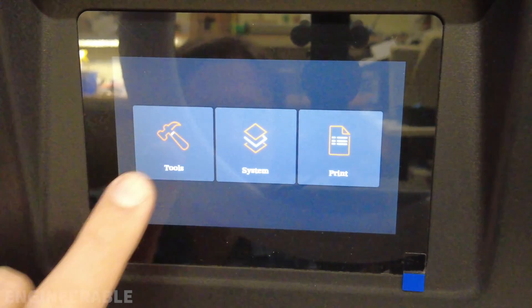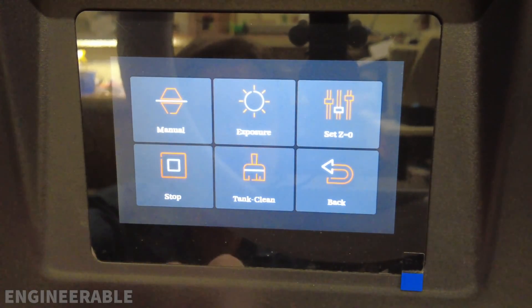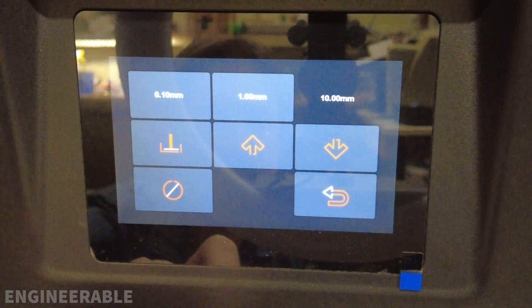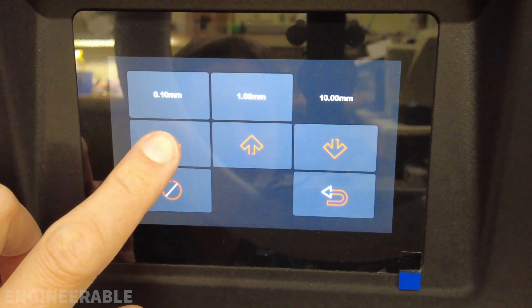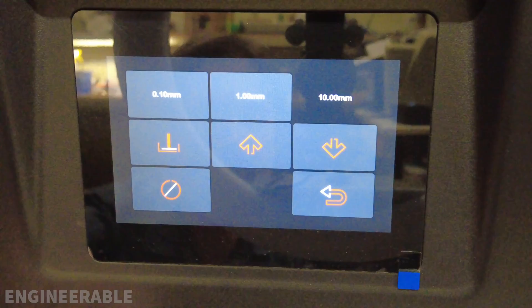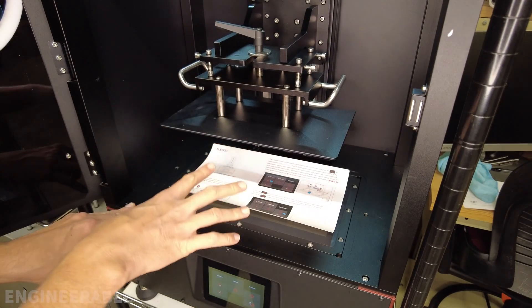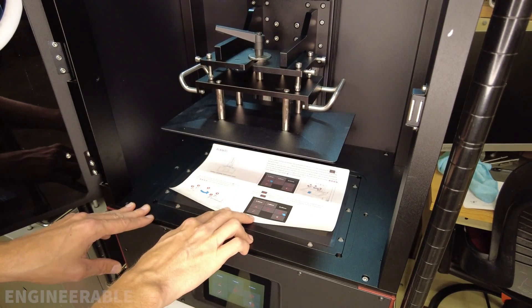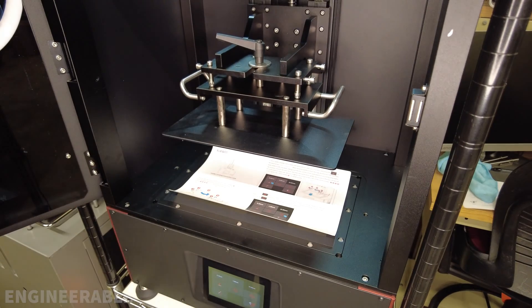Going to go to Tools, Manual, and then we're going to push this leveling button. And the Z-axis is going to lower onto this card here. We're just going to wait for that to come to a stop.